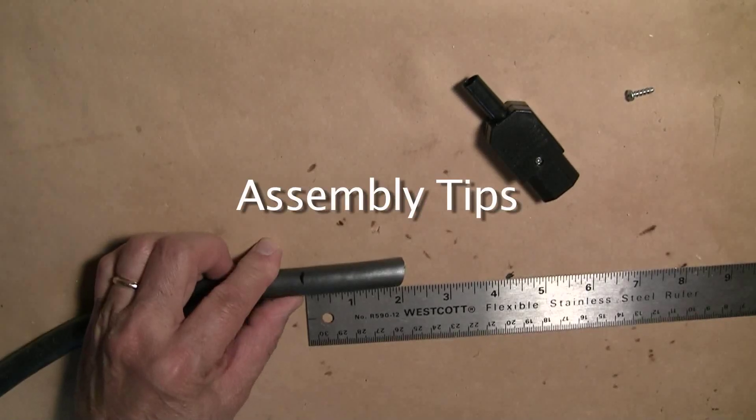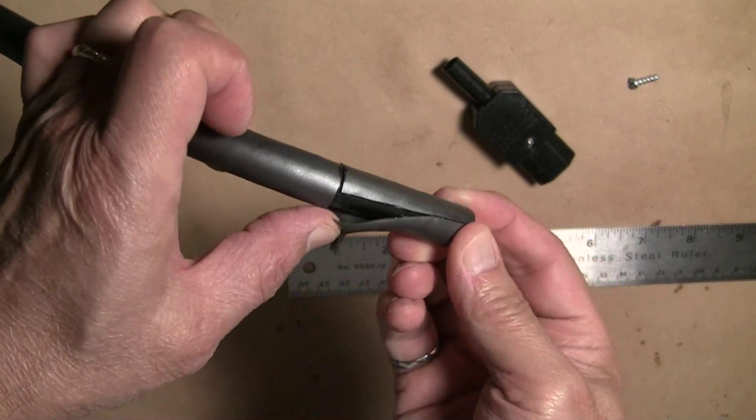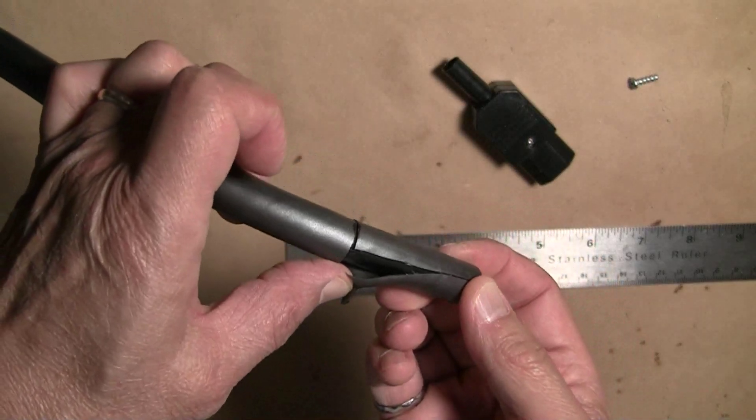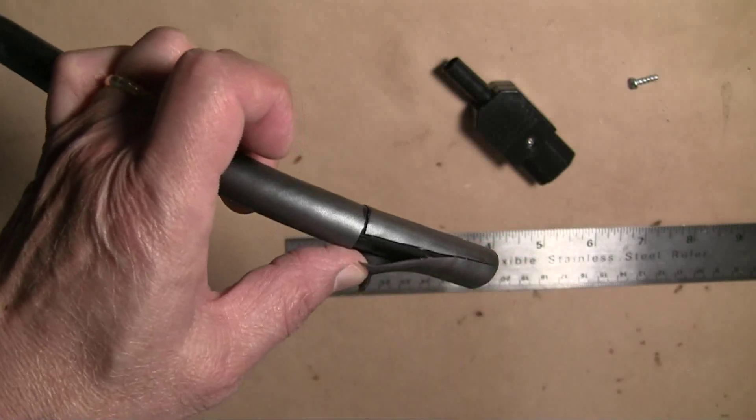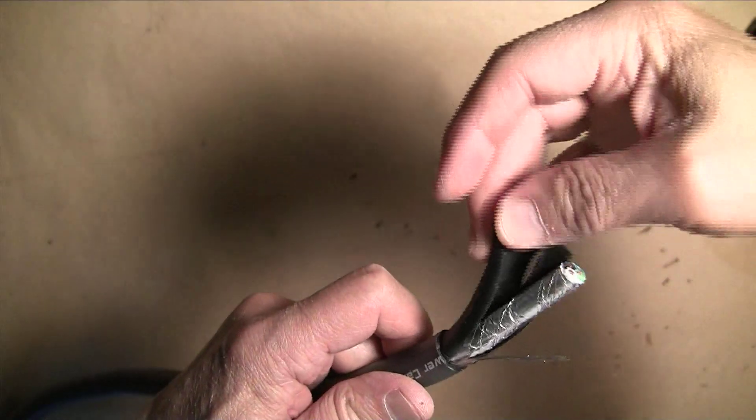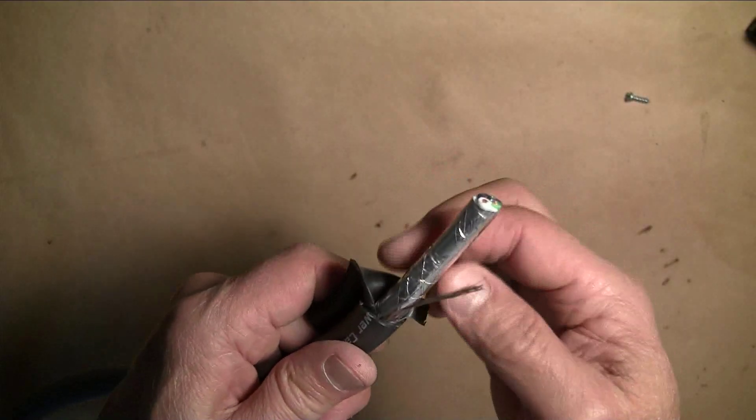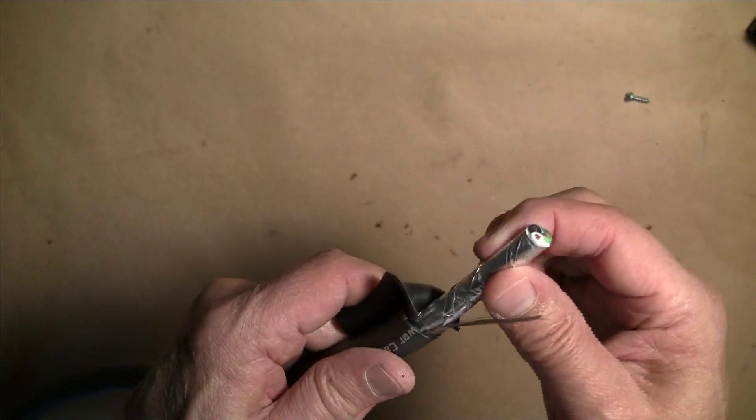I am going to strip about two inches of the insulating sheathing material. There is actually a thin outer sheath and a thicker inner sheath. Once the inner sheath has been stripped off, you can see the shielding which looks like an aluminum wrapping.